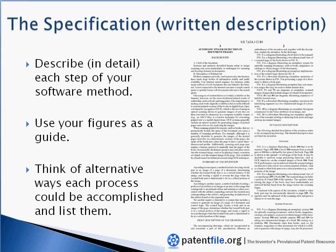After you have your figures done, you should sit down and write your written description, where you're trying to describe in detail each step that your software process goes through. You can never have enough detail here. Use your figures as a guide — remember that numbering scheme we showed you — and use that as your guide when writing your written description. You'd also want to think of alternative ways your software program could work: maybe you could add some steps, take some steps out, or have the steps go in a different order. You'd want to describe as many different examples as you can.